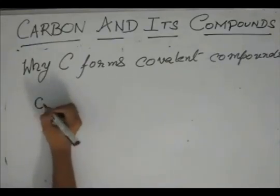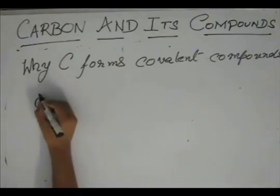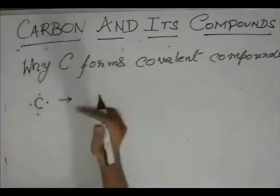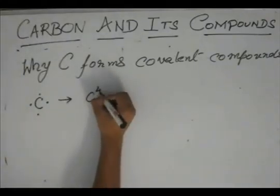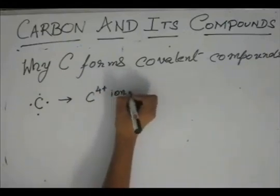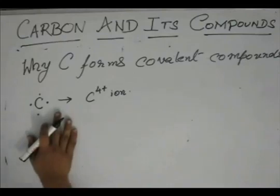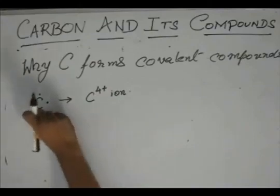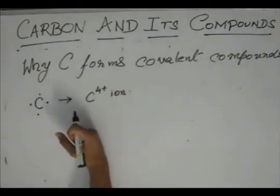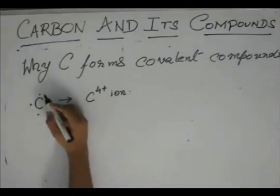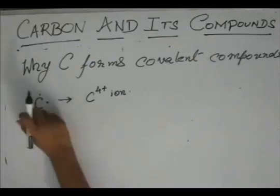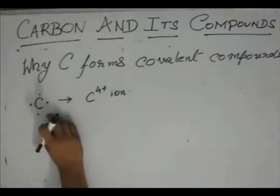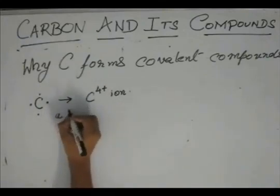Now to form electrovalent compounds, carbon has four electrons, so it can give away these four electrons and become a C4+ ion. But the problem arises with how much energy is required to take out these electrons from carbon.